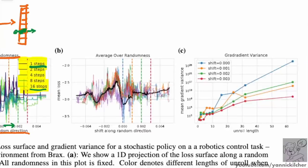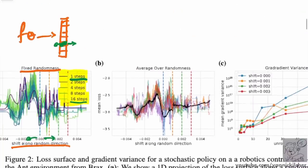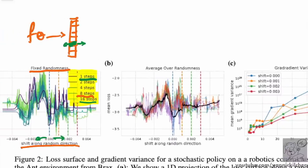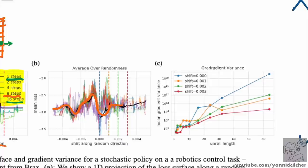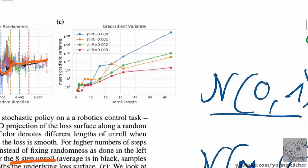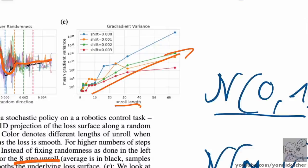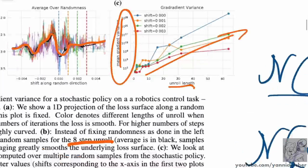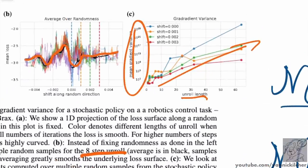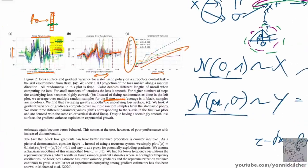They show what happens if you don't just look at one unroll but do a bunch and take the average over the randomness. Averaging helps — even for an eight-step unroll, averaging over samples gives a smoother line. But if you look at the gradient variance on a log scale as you unroll for more steps, you can see that the variance essentially explodes. That's the problem the paper wants to highlight.